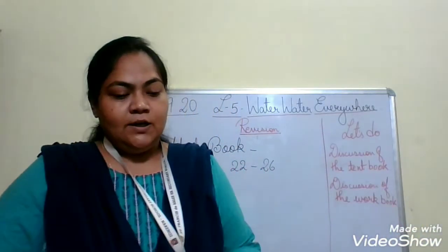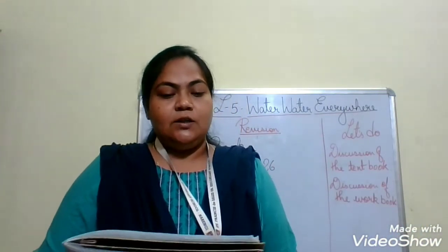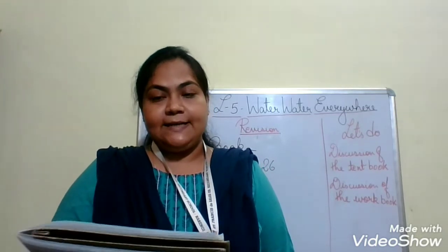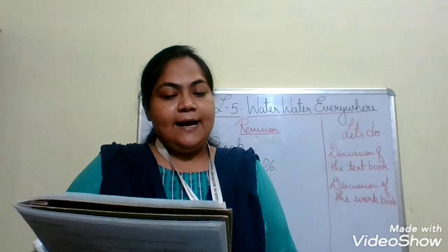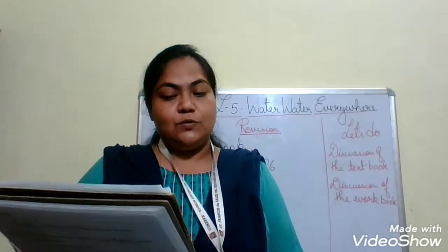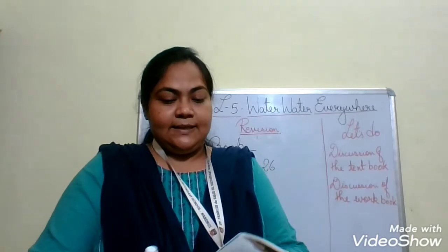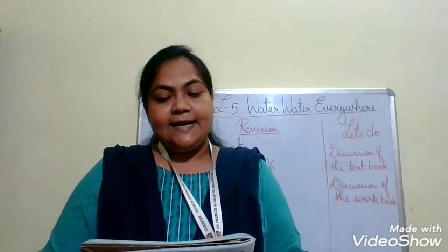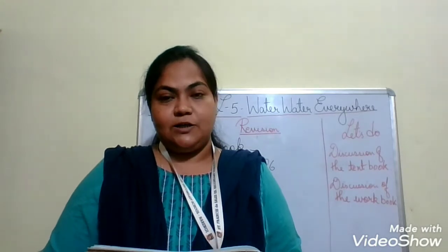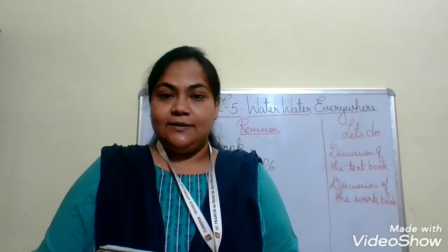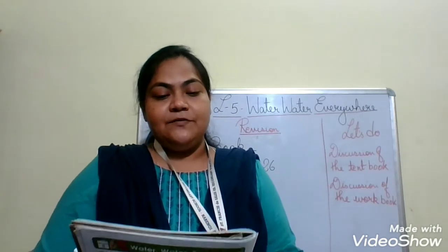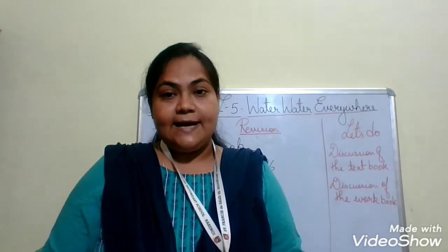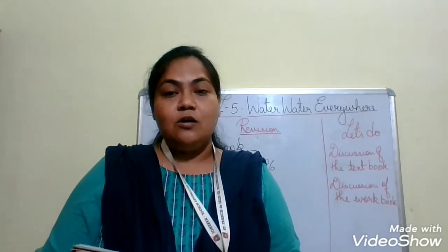Here we have the multiple choice question. The water from the rain is called rainwater — that is number D. 'I am the main source of water, who am I?' — the answer is D, that is rain. Then comes fill in the blank: 'Dash and ocean have large water bodies' — ocean is given, and the other one is sea. Then: 'River, ponds, lakes and wells are called dash bodies' — they are called water bodies.